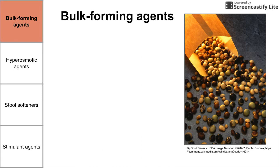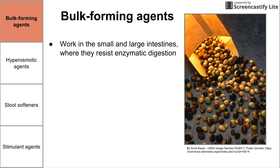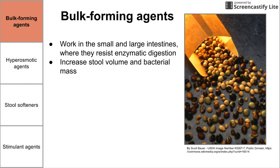Let's begin with the bulk forming agents. Bulk forming agents work in the small and large intestine. They resist enzymatic digestion — humans do not have the enzymes required to digest them. They therefore increase stool volume and bacterial mass, because bacteria grows in the GI tract. They also absorb water. The main bulk forming agent we're talking about is fiber — specifically insoluble fiber.